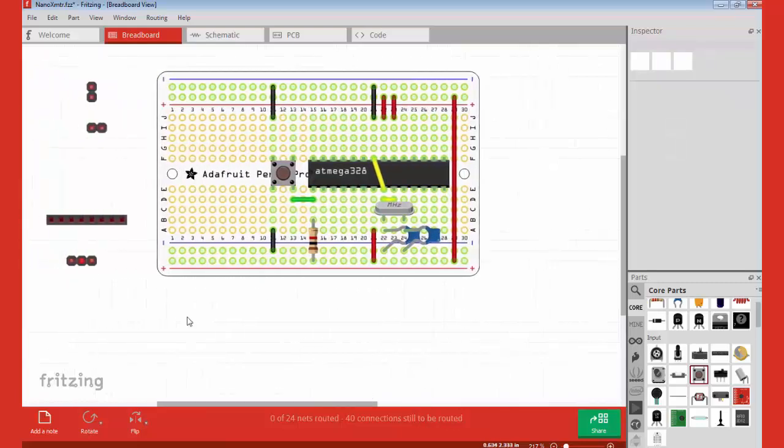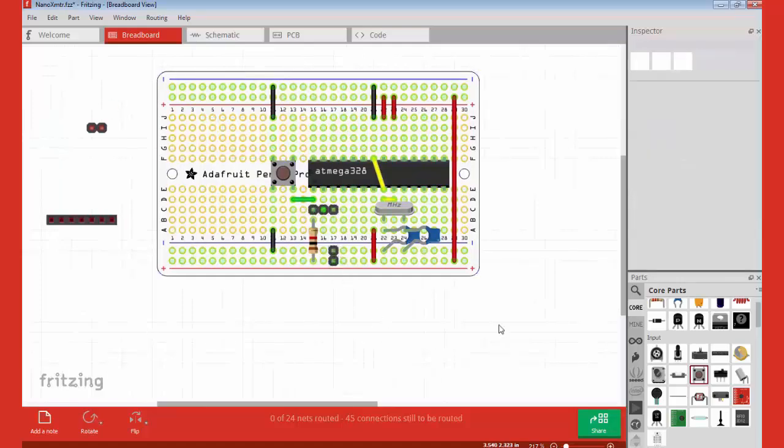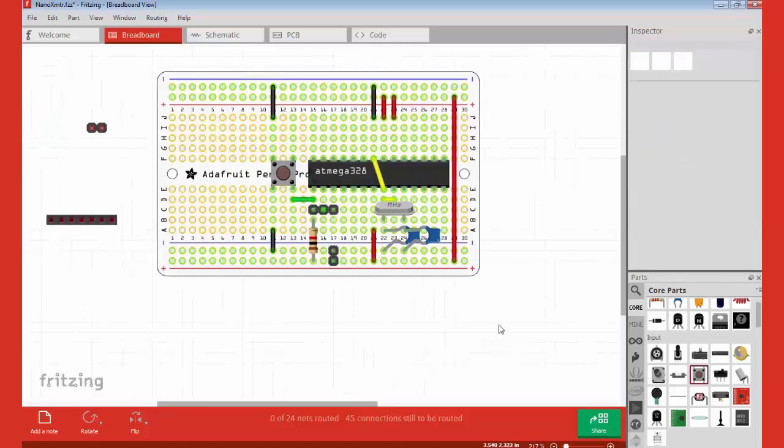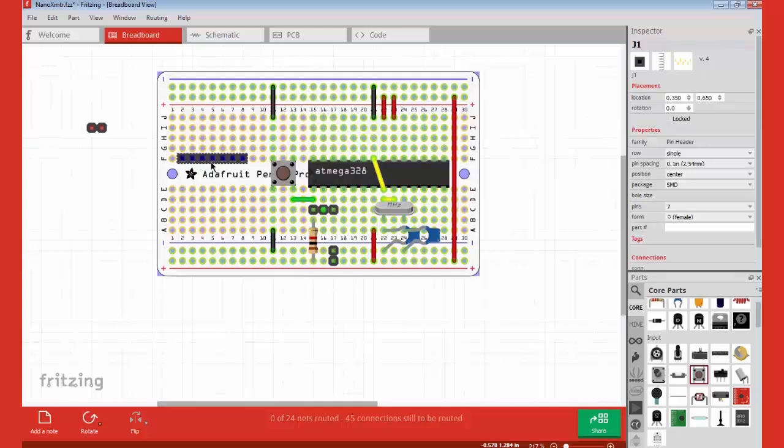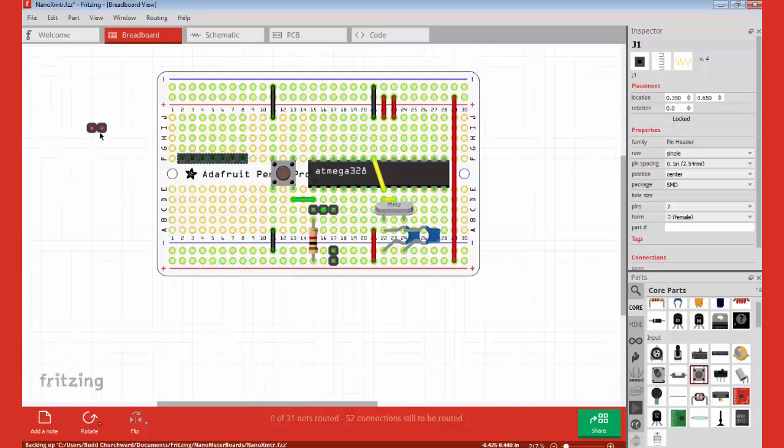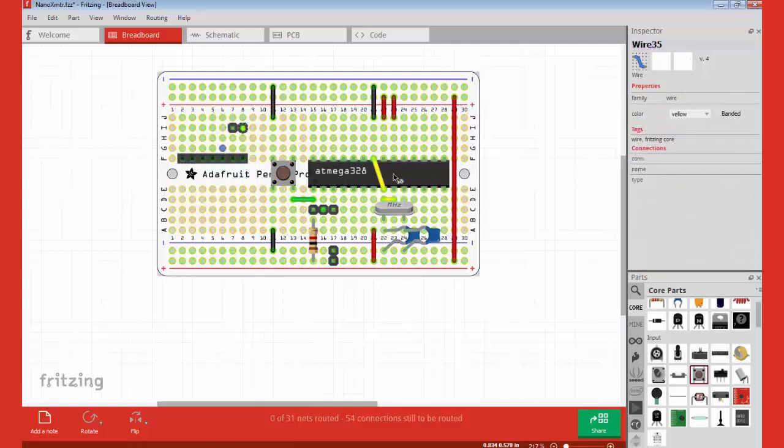Now I'm going to bring in some headers so we can hook other devices up to the board. These first two sets are for programming. I can hook it right up to an Arduino Uno. This one here will go to our buck puck LED driver, and this one provides the two pins that go to the LED itself.